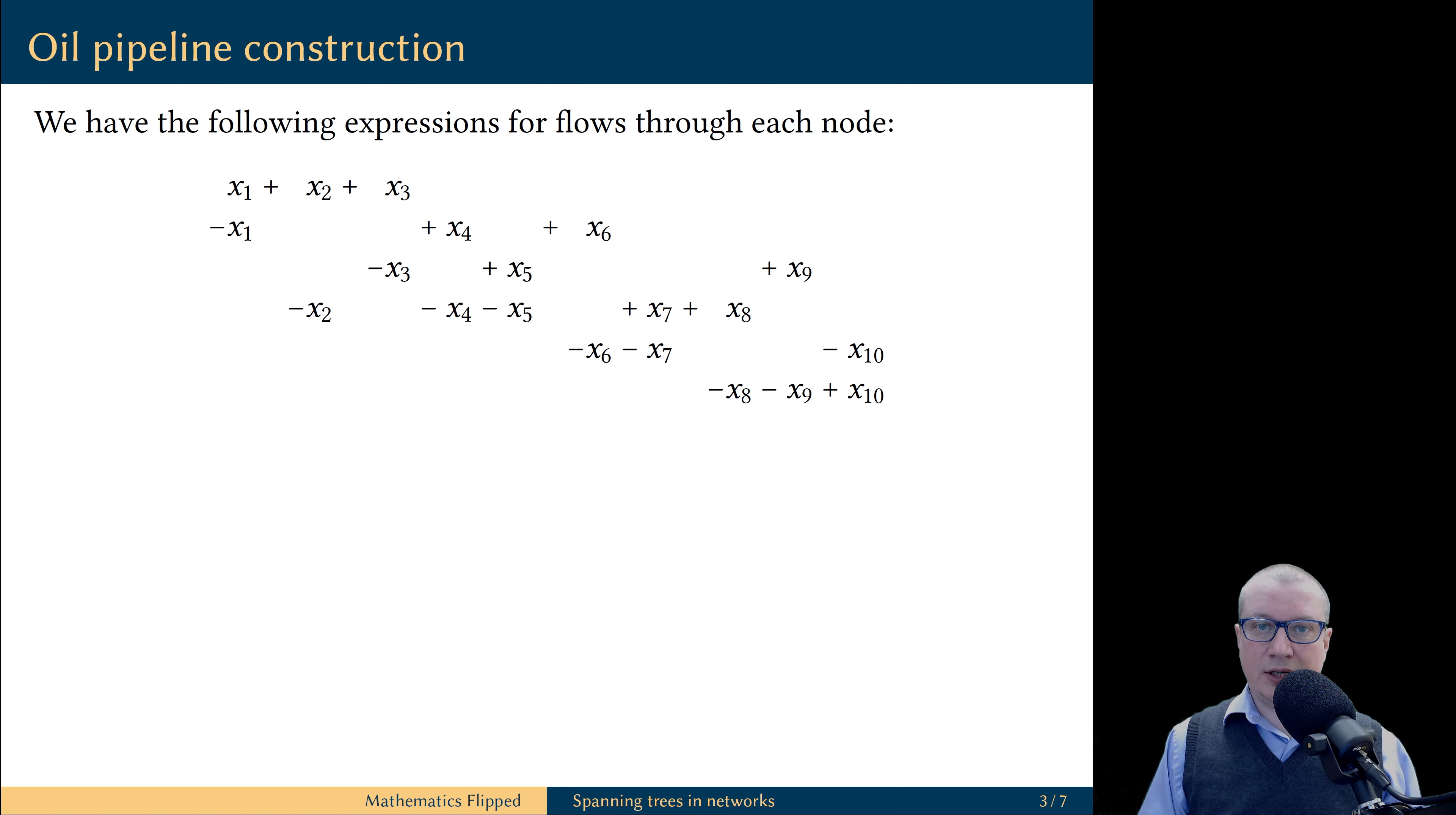We can rewrite these expressions in a more rectangular way. And now you should recognize that these expressions correspond to a left-hand side of a certain linear system. What we're missing are the equality signs and the vector of constants on the right-hand side.